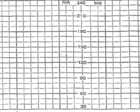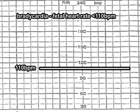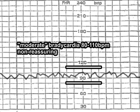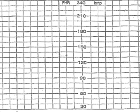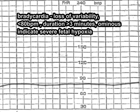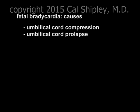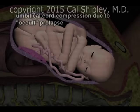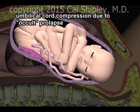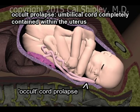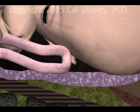The term bradycardia refers to decreased heart rate, and it is defined by the American College of Obstetrics and Gynecology as a baseline fetal heart rate of less than 110 beats per minute. Moderate bradycardia of 80 to 110 beats per minute is a non-reassuring sign. Loss of variability during moderate bradycardia, or severe bradycardia — defined as a heartbeat of less than 80 beats per minute occurring for three minutes or longer — are ominous signs and indicate severe fetal hypoxia. Causes of severe fetal bradycardia during labor include umbilical cord compression, particularly in association with umbilical cord prolapse. Here is an example of umbilical cord compression occurring during labor as a result of a low-lying, or occult, prolapse of the umbilical cord — the term occult referring to the fact that the umbilical cord is contained completely within the uterus and cannot be seen or felt by the examining physician.